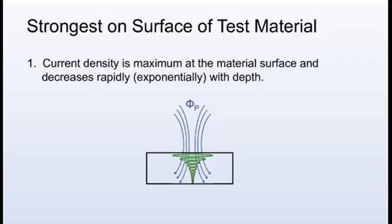Current density is maximum at the material surface and decreases rapidly, exponentially with depth.